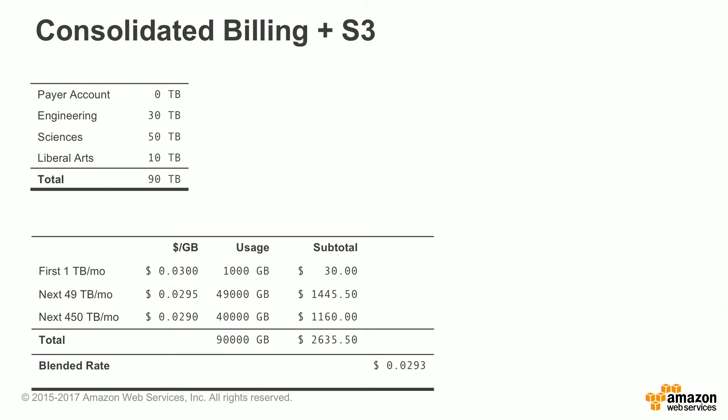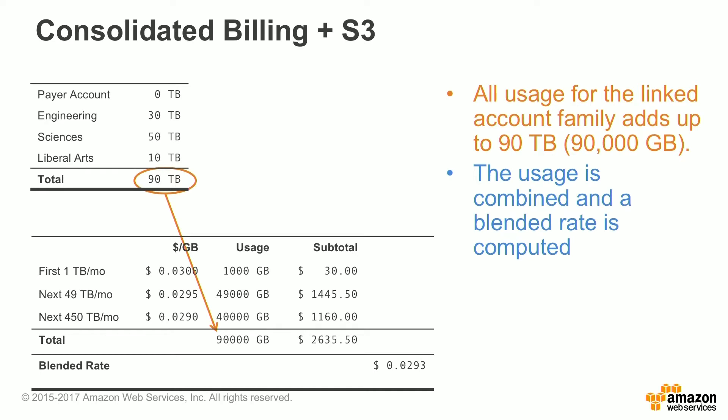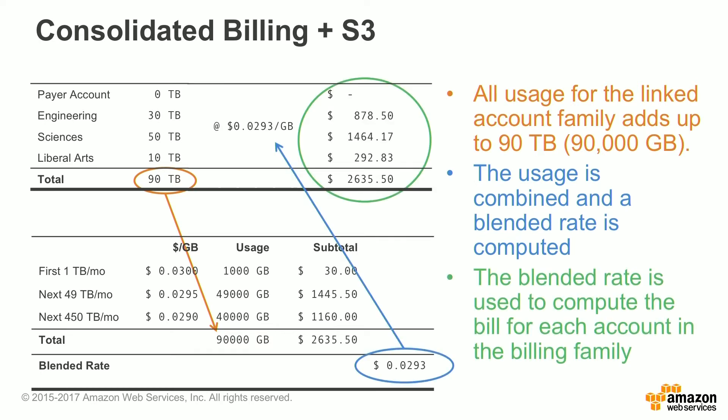Let's talk about how consolidated billing works with S3. All usage in this example for a linked account family will add up to about 90 terabytes. We've got multiple accounts: a payer account, an engineering account, a sciences account, and a liberal arts account. The account usage is combined and then a blended rate is computed. Because there are volume and tier discounts for things like S3 — the more storage you have in S3, the lower your actual per-gigabyte rate is — the blended rate takes those discounts into consideration and is used to compute the actual bill for each account in the family.